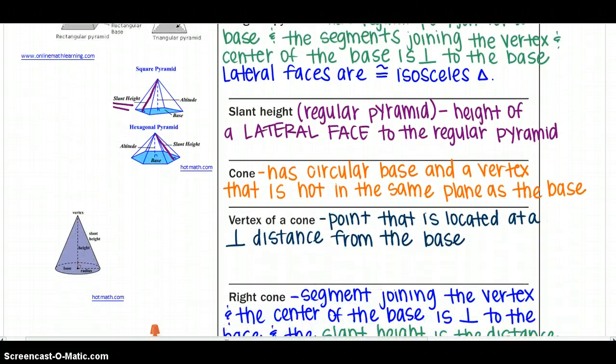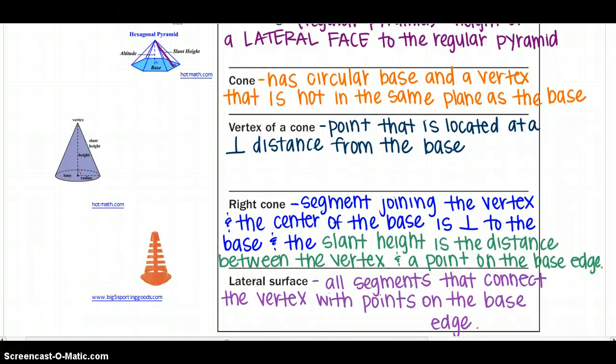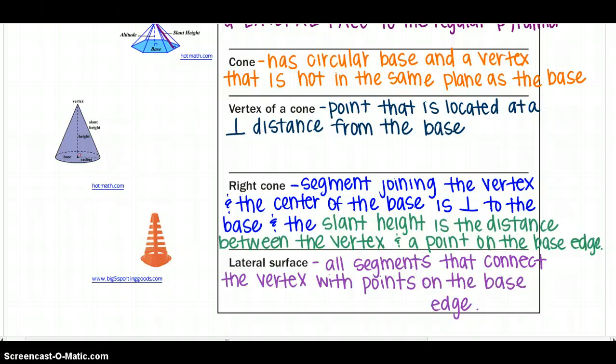Moving on to cones. Since my brain focuses on athletics a lot of times, I think of cones as being those cones that you maybe don't like to see on the field you have to run around or something. But a cone has a circular base and a vertex that is not in the same plane as the base. So just looking for that circular part of this solid and the vertex. The vertex of the cone is the point that is located at a perpendicular distance from the base. So again, it's that top point, and we know that it's perpendicular to the base.